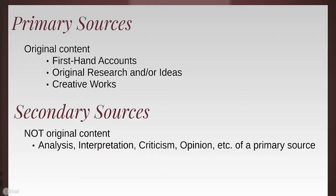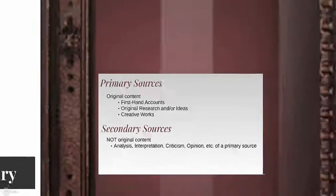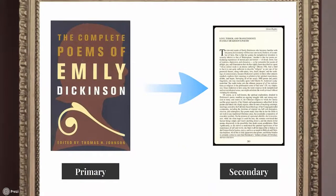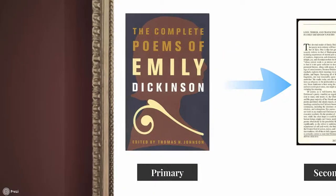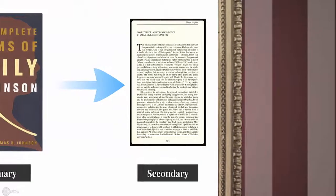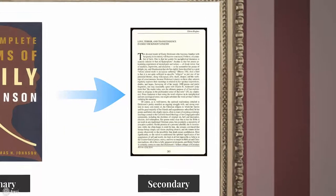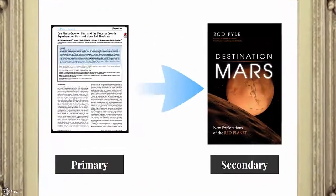Distinguishing between these two can seem complicated at first, but it gets easier as you see more and more examples. A book of poetry by Emily Dickinson is a work of original content and thus a primary source. A journal article that discusses and analyzes Dickinson's poetry is a secondary source.